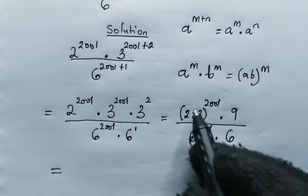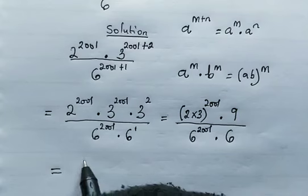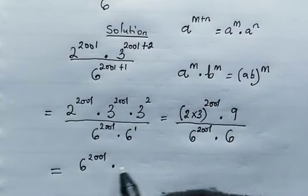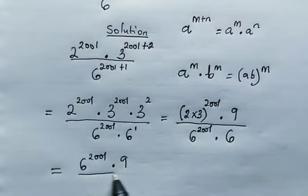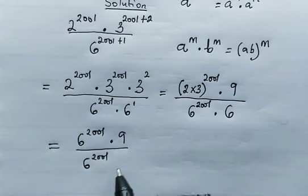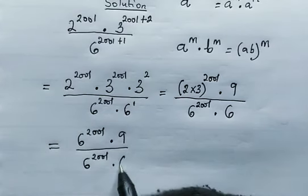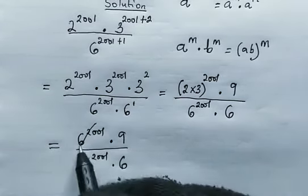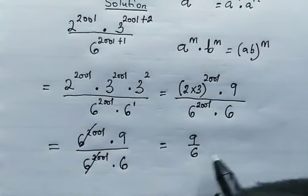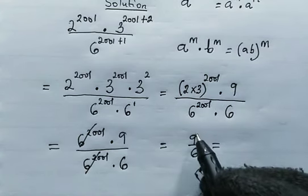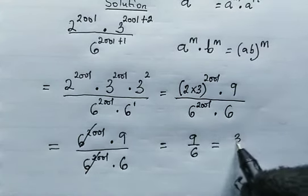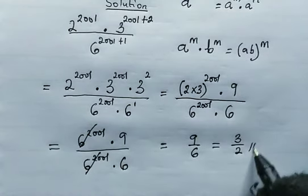Now from here, we have 6 to the power of 2001 multiplied by 9, the whole of this divided by 6 to the power of 2001 multiplied by 6. The 6 to the power of 2001 terms cancel, and we have 9 divided by 6, which when we divide the numerator and the denominator by 3, we get our final answer: 3 over 2.